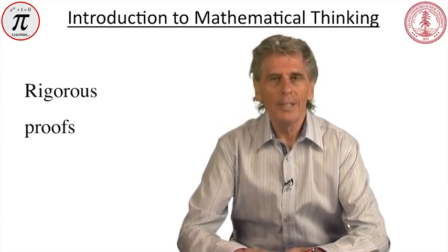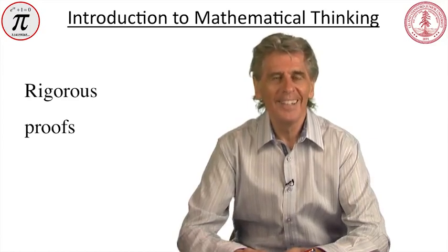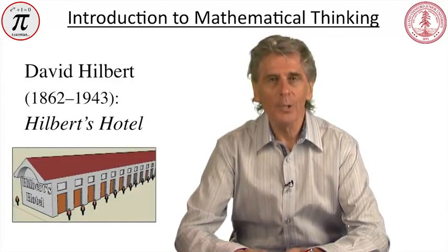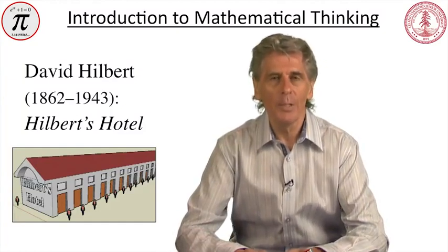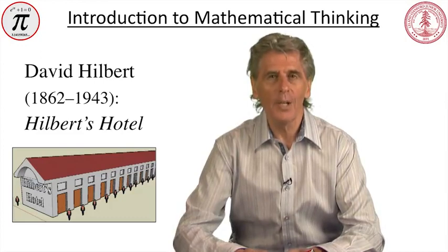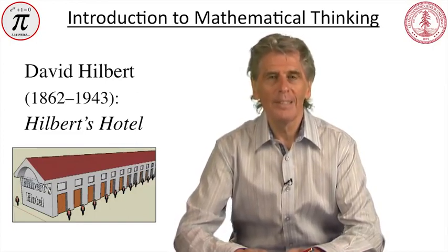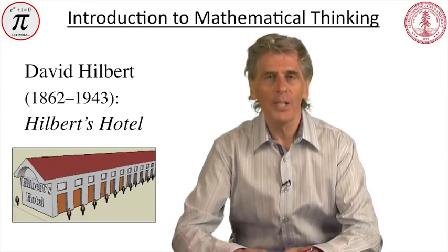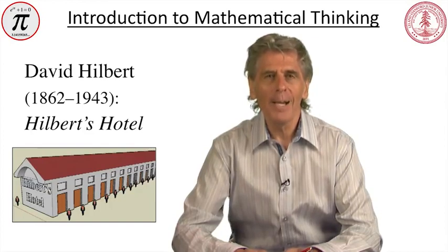Hilbert's Hotel, as it's become known, is the ultimate hotel in that it has infinitely many rooms. As in most hotels, the rooms are numbered using the natural numbers. One, two, three, etc. One night, all rooms are occupied when an additional guest turns up. I'm sorry, says the desk clerk. All our rooms are occupied. You'll have to go somewhere else. The guest, a mathematician, thinks for a while before saying, there is a way you can give me a room without having to eject any of your existing guests. Before I proceed with this story, you might like to stop the video for a moment and see if you can see the solution the mathematician guest has seen.